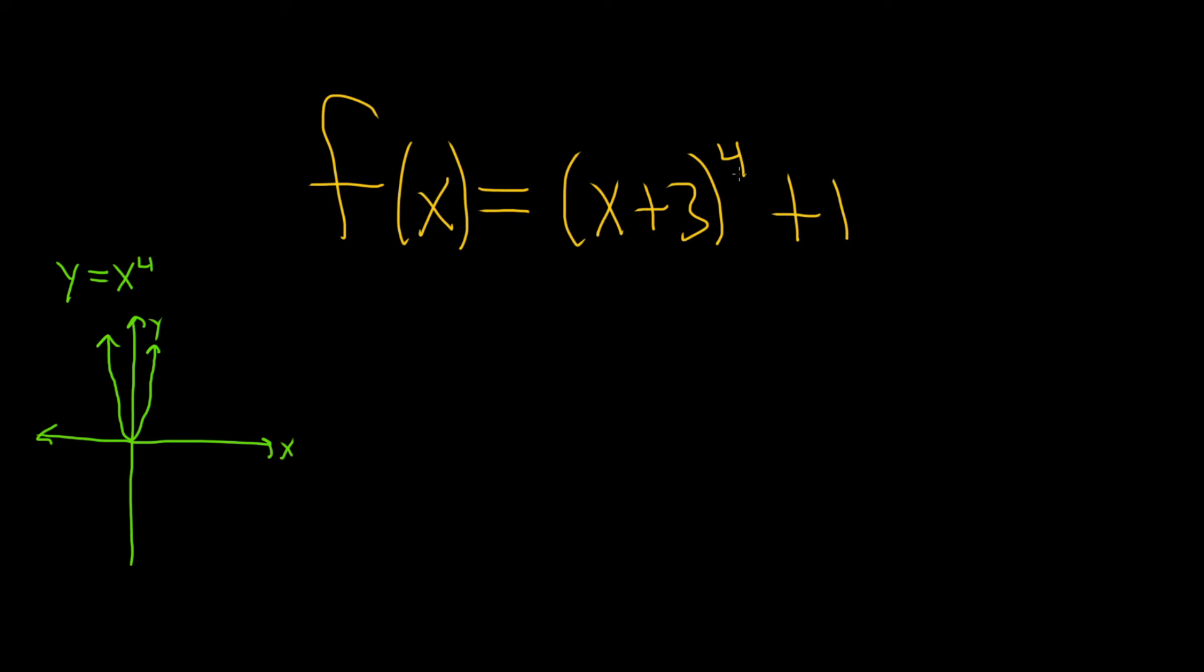So now in this problem here, we're adding 3 to it, so when you do that, I'll just call it y again, a bit abusive using the same notation, but that's okay, it's a different graph. When you add a number to the x, it's backwards, so you go left by 3. So in this case, we would take the graph of x to the fourth, and just go left 3,